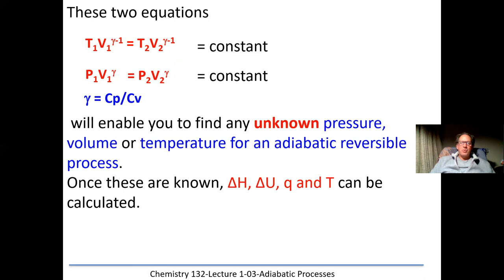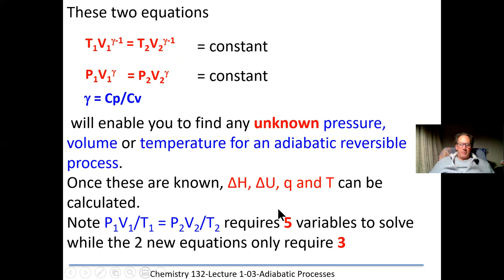Once we know these values we can calculate delta H, delta U, heat q, and temperature. Using the combined gas law you need five variables to solve for the sixth, but using these adiabatic equations you only need three variables to solve for the fourth. I only use the adiabatic equations when necessary; if given enough variables I'll continue to use the combined gas law.